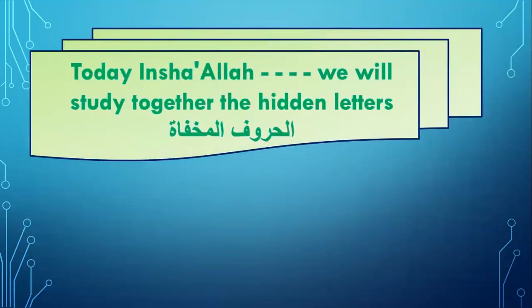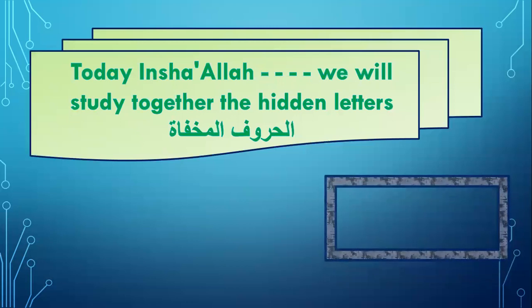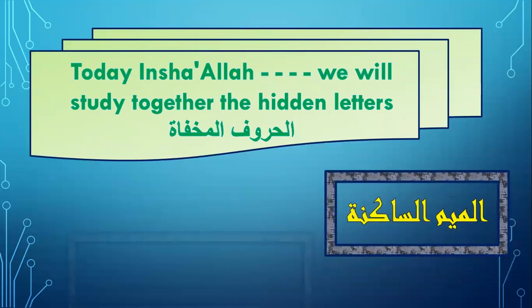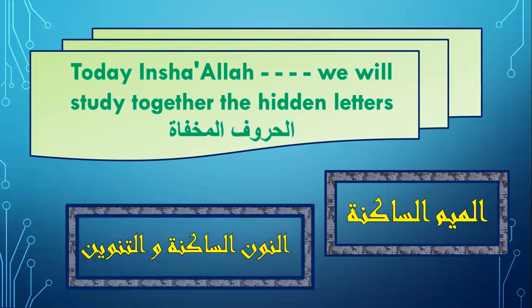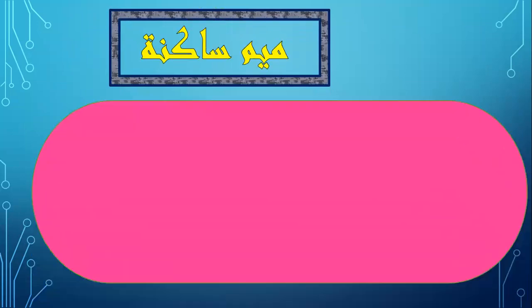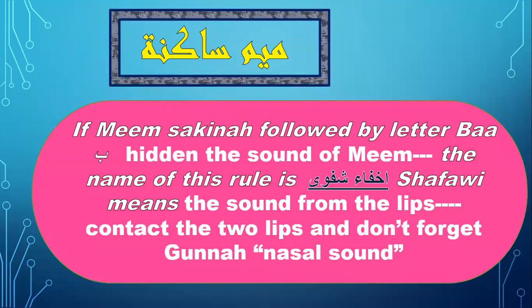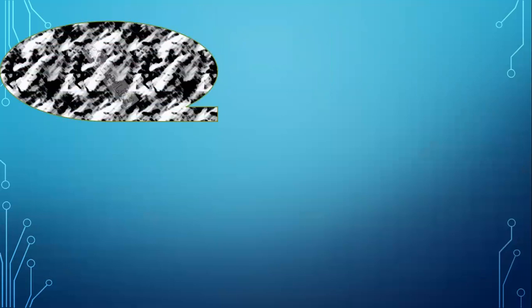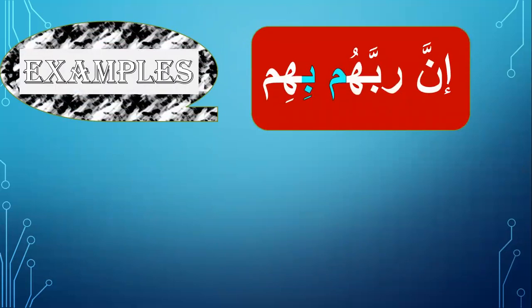We will learn today, inshallah. We will study together the hidden letters — Al-Huroof Al-Mughfa. Hidden letters with Mim Sakinah, and hidden letters with Nun Sakinah and Tanween. Let's start with Mim Sakinah. If Mim Sakinah is followed by the letter Ba, hide the sound of Mim. The name of this rule is Ikhfa' Shafawi. Ikhfa' Shafawi means the sound comes from the lips. Contact the two lips and don't forget the Ghunna — the nasal sound. Please repeat after me the examples.